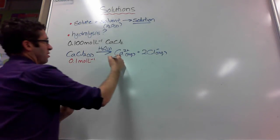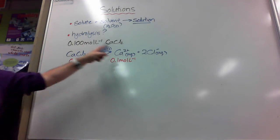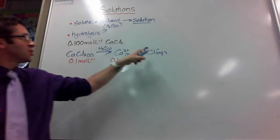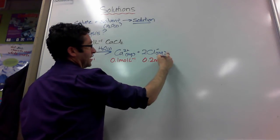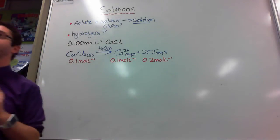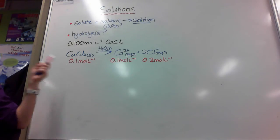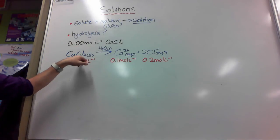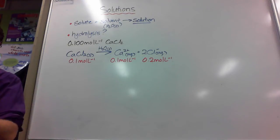That means I've got 0.1 moles per litre of calcium ions because they're in a one-to-one ratio in the equation. Because these are in a one-to-two ratio, there's 0.2 moles per litre of chloride ions. It seems like we're making 0.3 moles per litre of stuff from 0.1. That's not quite how it works.